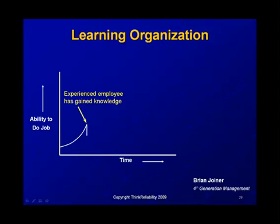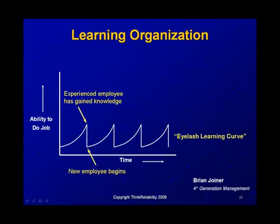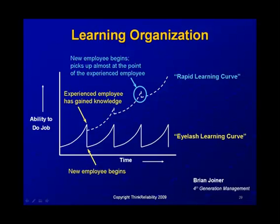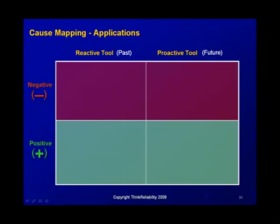The idea is how do we create a learning organization? If somebody's ability improves over time but that experienced individual then leaves and a new employee starts, we have to relearn everything. This is Brian Joyner's 'eyelash learning curve' concept from Fourth Generation Management — how do you build on experience so that new employees don't start from scratch, but build on what was learned? That's the concept of a learning organization: best practices, cumulative knowledge, and organizational knowledge.